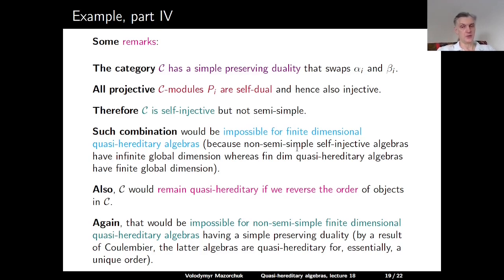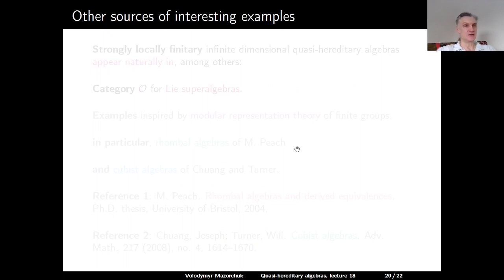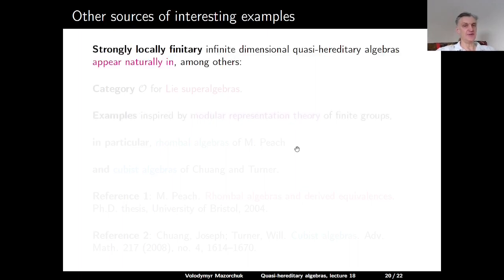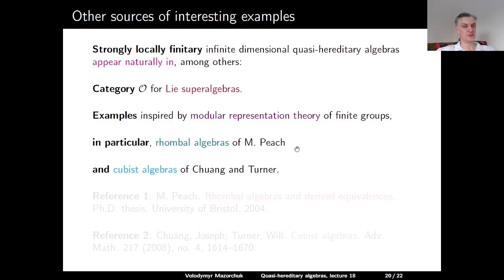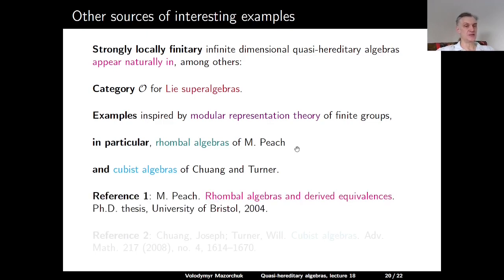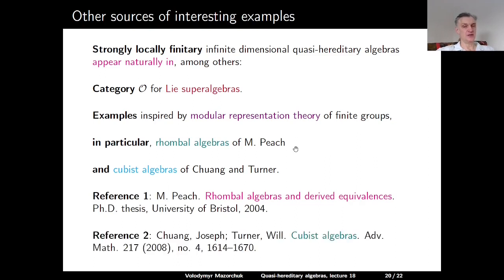Some comments on other sources of interesting examples: strongly locally finitary infinite-dimensional quasi-hereditary algebras appear naturally in the representation theory of Lie superalgebras and in examples inspired by modular representation theory of finite groups. This includes Rhombal algebras by Peach and Cubist algebras by Chuang and Turner. For the latter, see Peach's PhD thesis (Bristol, 2004), titled 'Rhombal algebras and derived equivalences,' and the paper 'Cubist algebras' by Chuang and Turner, which appeared in 2008.